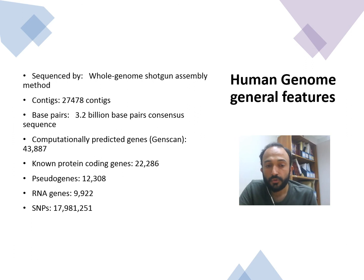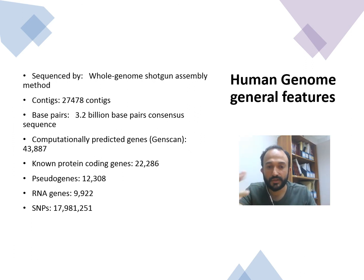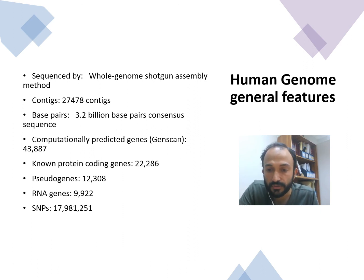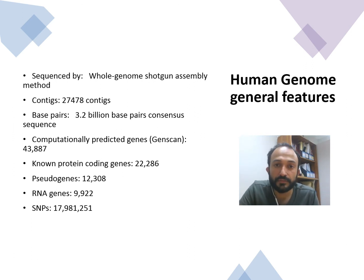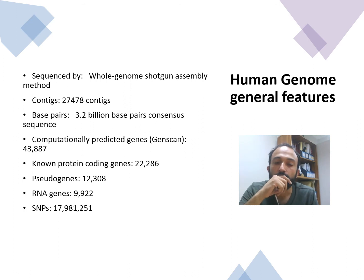Pseudogenes are genes that have all the features necessary to function as a protein-coding gene, but due to some evolutionary change or mutation, the gene becomes non-functional. There is a slight difference between non-coding genes and pseudogenes. The difference between pseudogenes and non-coding RNAs is something that may come up as a question.